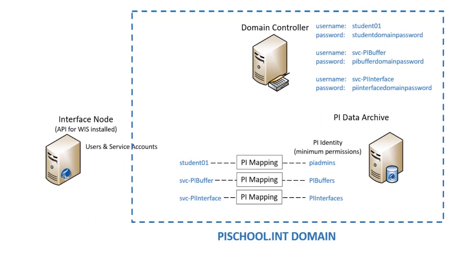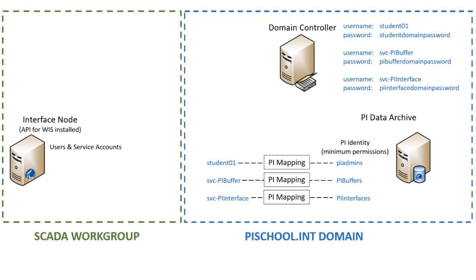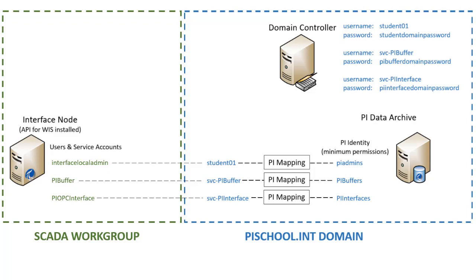However, what happens when your interface is in a workgroup, but you still want to take advantage of the benefits of Windows Integrated Security and PI API for Windows Integrated Security? The interface node doesn't recognize the domain users or service accounts. And if you set up local accounts on the workgroup machine for your users and services, they won't be recognized by machines on the domain, so you won't be able to authenticate to the PI Data Archive using Windows Integrated Security. And since security is a top concern, we want to avoid trusts.